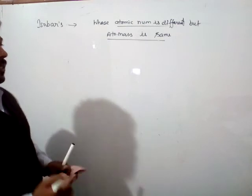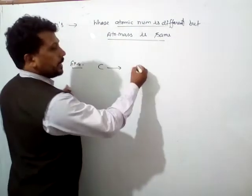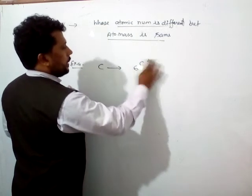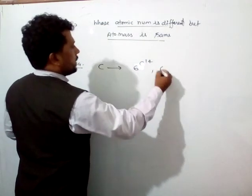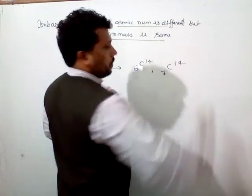So according to this, we can be written as carbon atom: these are 6C14 and 7N14.